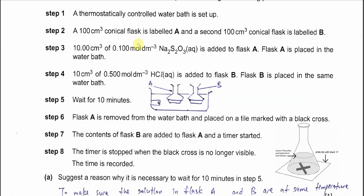Step 1: a thermostatically controlled water bath is set up to ensure the temperature is always constant. Step 2: label one conical flask A and a second conical flask B. Put 10 cm³ of 0.1 mol per dm³ sodium thiosulfate into flask A and place in the water bath.